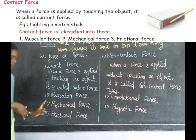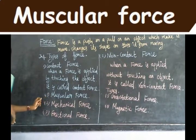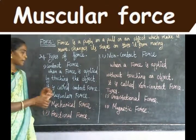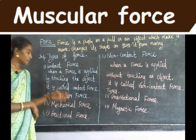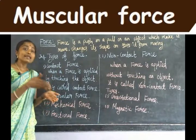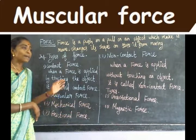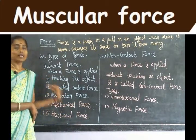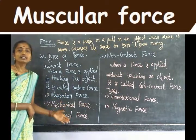Muscular force: when force is applied on an object by using our body parts, it is called muscular force. For example, when you ride a cycle, you use your legs for paddling — the force applied by your legs is muscular force.